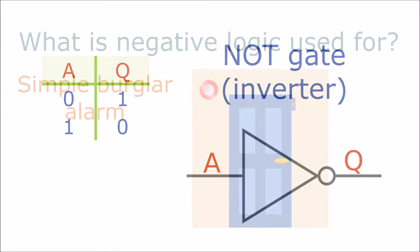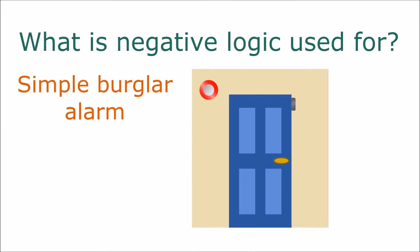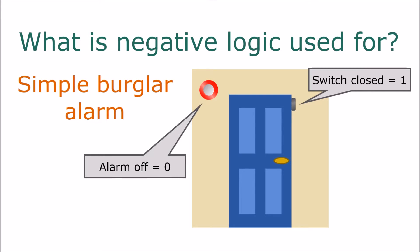What is negative logic used for? Take the example of a simple burglar alarm. There is a switch on the door which is normally closed, that is switched on when the door is closed. So the switch has a value of one when the door is closed. The alarm bell of course should not sound when the door is closed. The alarm should be off or zero in logic gate terms.